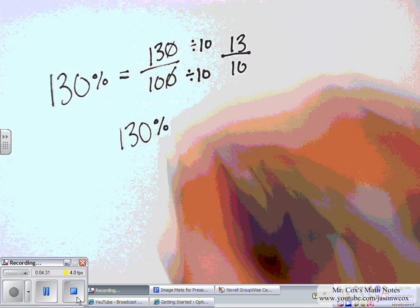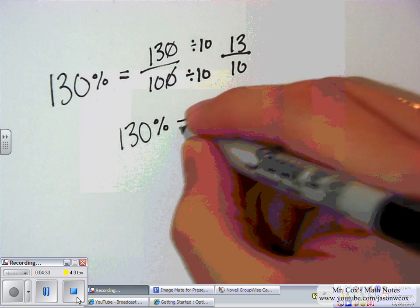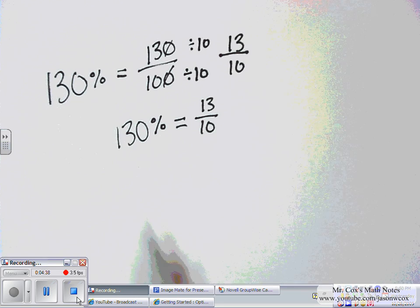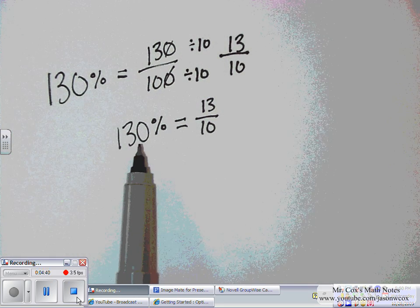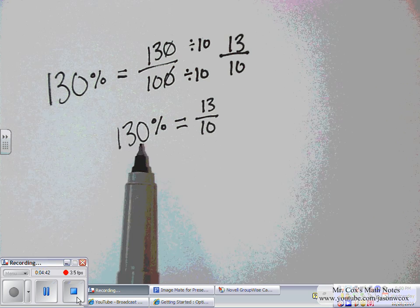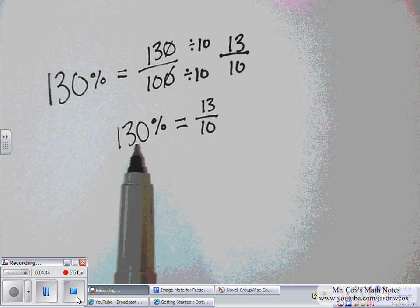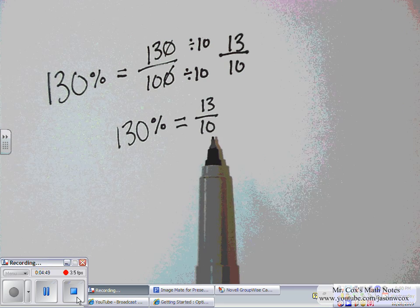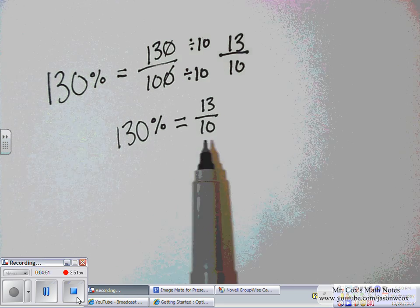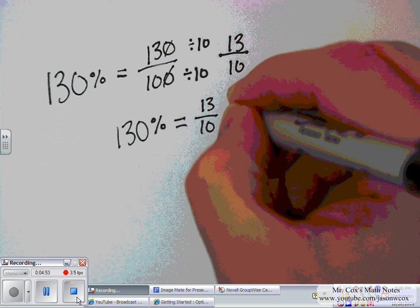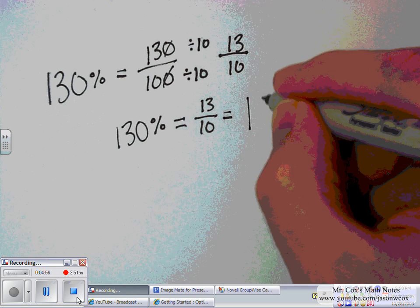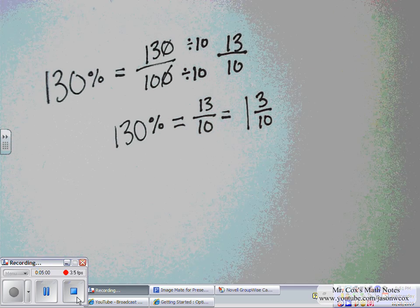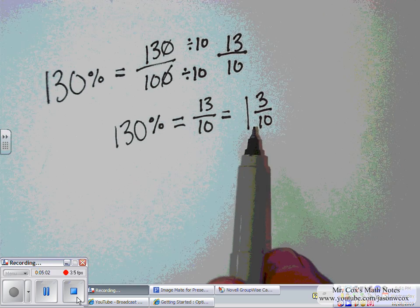130% equals 13 tenths. And I know this is right because 130% is greater than 1, thus it being over 100%. 13 tenths is also greater than 1 because it's an improper fraction. If I wanted to, I could convert that and make it 1 and 3 tenths into a mixed number. But this is still all equivalent.